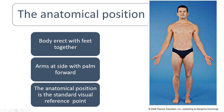What is anatomical position? The body is erect — that means the person should stand up. The feet should be parallel and together, and arms at the side with palms forward. This part is the arm, this part is the forearm, and this part is the hand, which has the palm. The palm should always face forward. Anatomical position is the standard visual reference point — when you are talking about any anatomical part, you have to use this position.